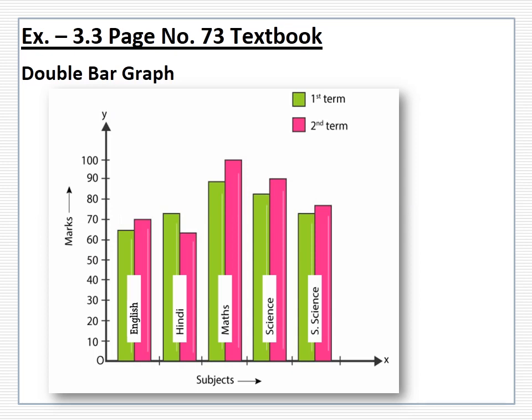I will explain how to draw a double bar graph to represent the given data — marks scored by a student in two terms. Subjects are on the x-axis and marks on the y-axis. I have taken a scale where 1 unit is equal to 10 marks — that is 10, 20, 30, 40 up to 100 on the y-axis. You can see that there are two boxes drawn on the top.